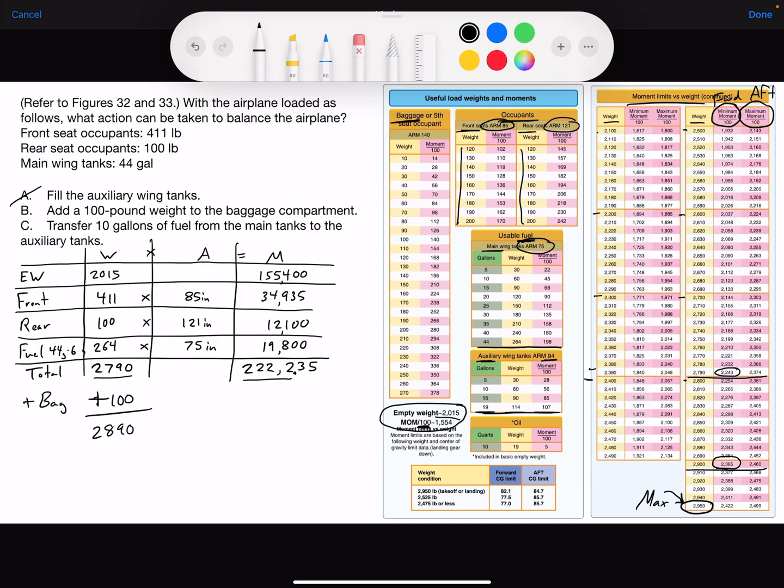And baggage compartment, if we look at figure 32, there's baggage. And 100 pounds is right here, moment of 140. Or we can use the arm, so 100 multiply by arm of 140 inch pounds, and we get 14,000.